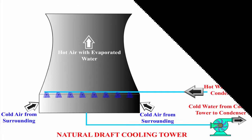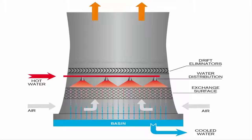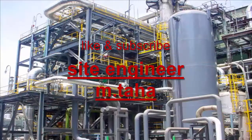The classification is based on the type of air induction into the tower. The main types of cooling towers are natural draft and induced draft cooling towers.